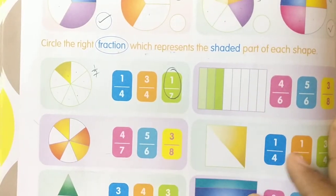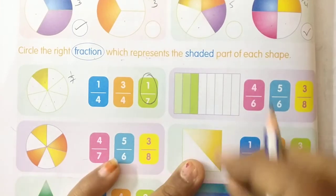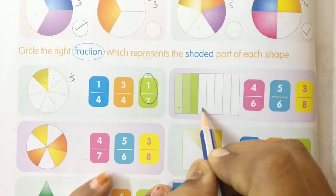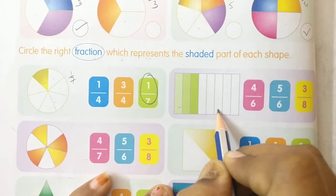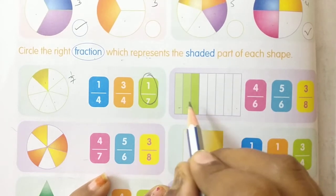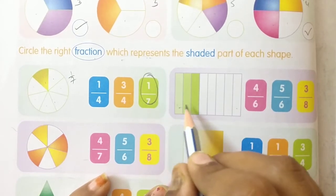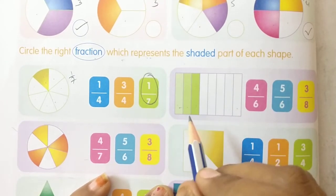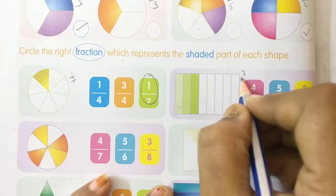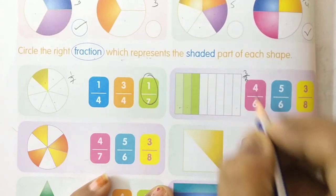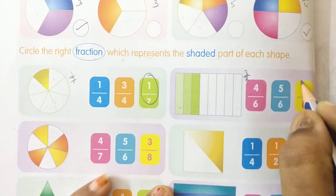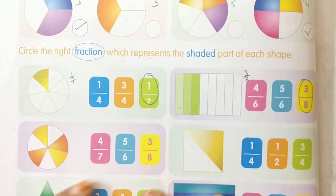Come to the next one. Total 8 parts — 1, 2, 3 are shaded. So the answer is 3 by 8. Looking at the options, we got 3 by 8. So circle this number.